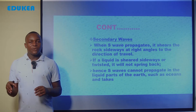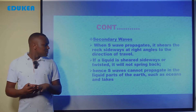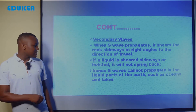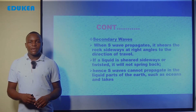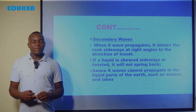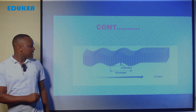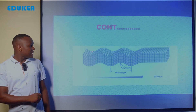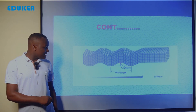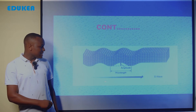Due to that reason, secondary waves cannot travel or propagate through the liquid of the earth — for example, in lakes and oceans, secondary waves cannot propagate. As you can see in the diagram, there is shearing sideways at right angles. This shows the wavelength, the amplitude, and the direction of propagation — that is the representation of secondary waves.